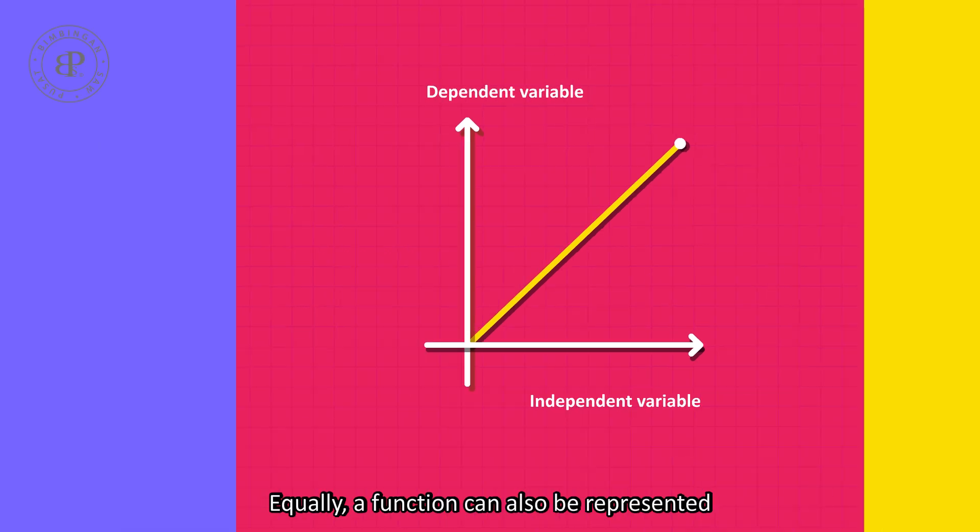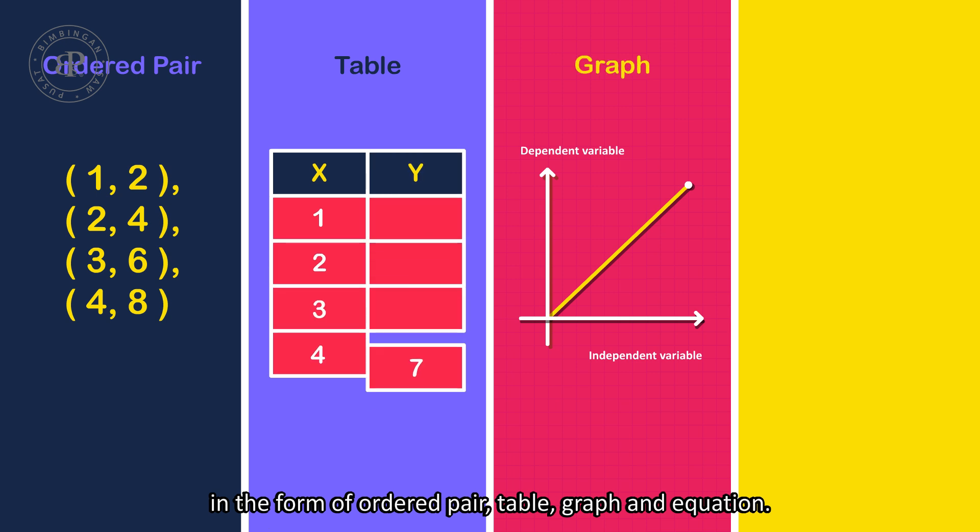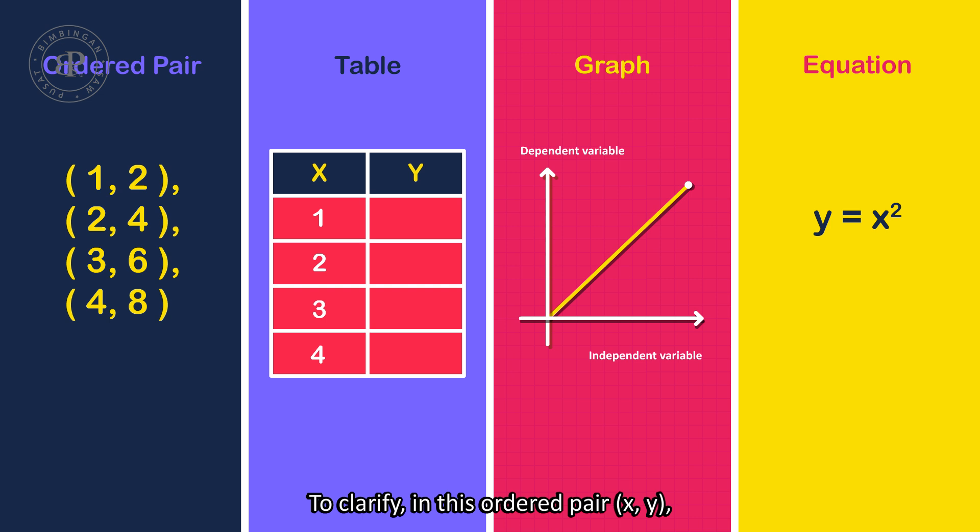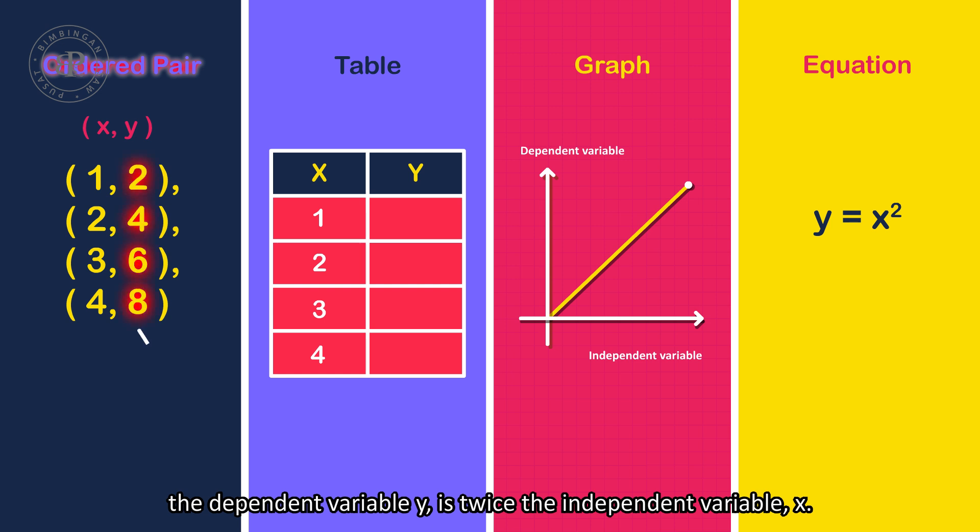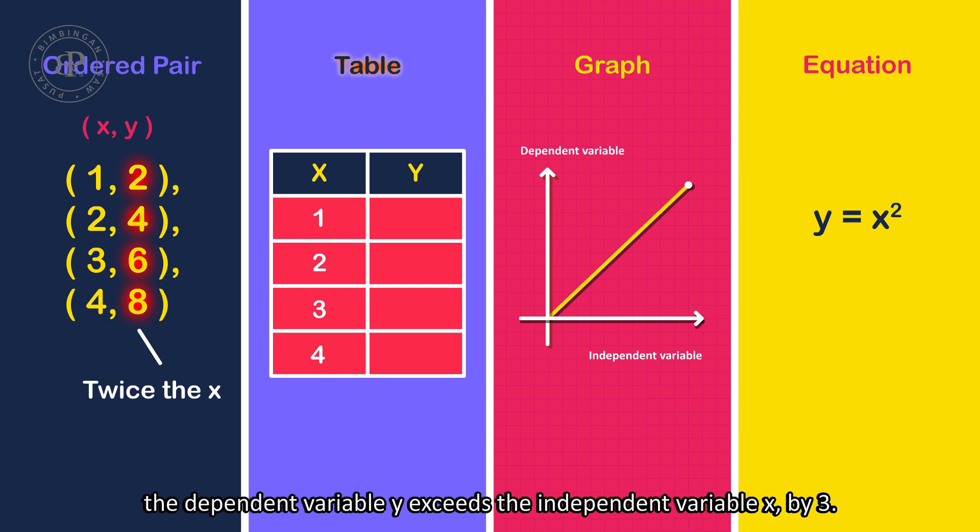A function can also be represented in the form of ordered pair, table, graph, and equation. To clarify, in this ordered pair x and y, the dependent variable y is twice the independent variable x. On the other hand, in this table, the dependent variable y exceeds the independent variable x by 3.